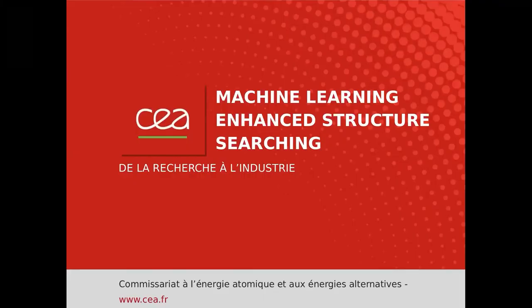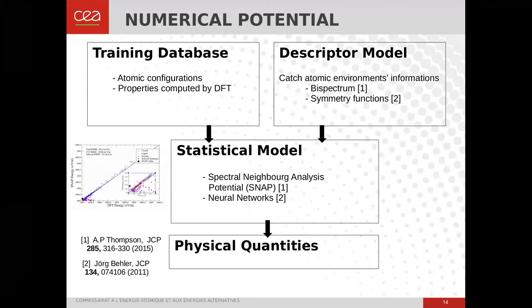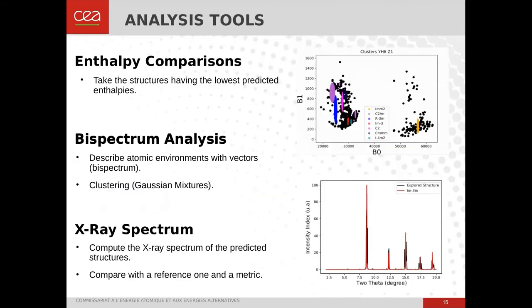Machine learning potentials are algorithms made of three main ingredients. The first is a training database gathering crystal structures and DFT-computed properties. The second is a descriptor model which translates atomic environments into vectors. The third is a statistical model which links the descriptor vectors to predicted physical quantities. I am considering two kinds: the SNAP potential, which combines generalized linear regression with a bispectrum vector, and a neural network-based potential using symmetry functions as a descriptor. The aim in using these potentials is to be able to explore several millions of structures.